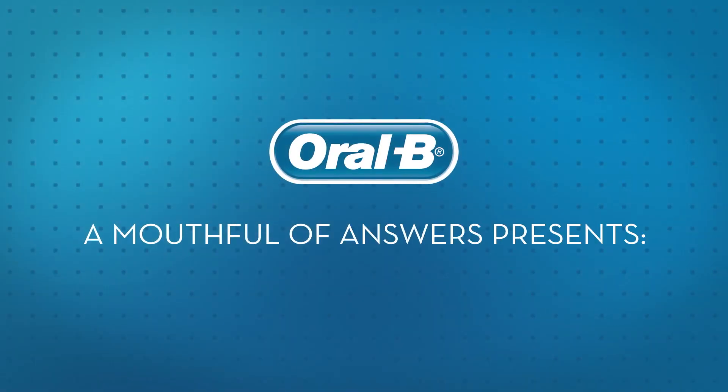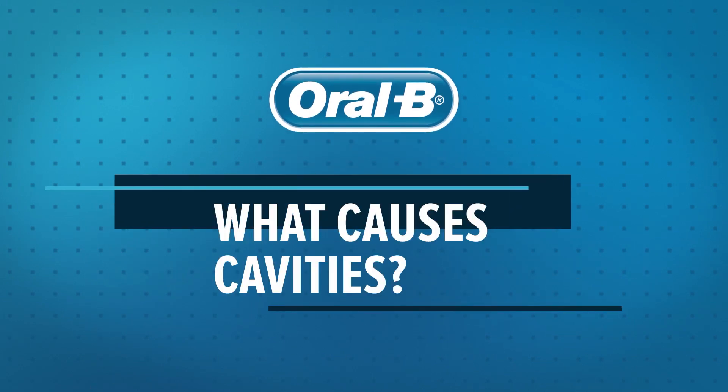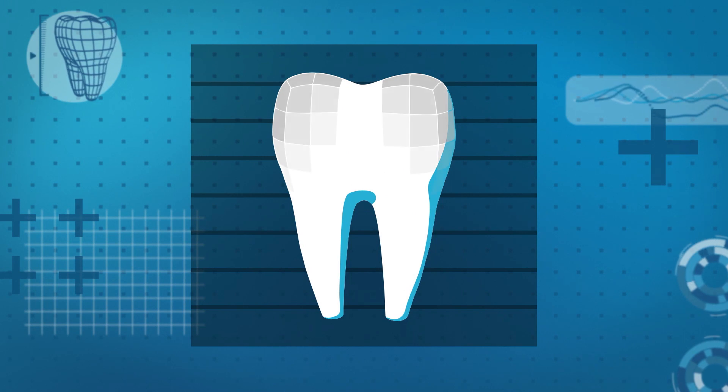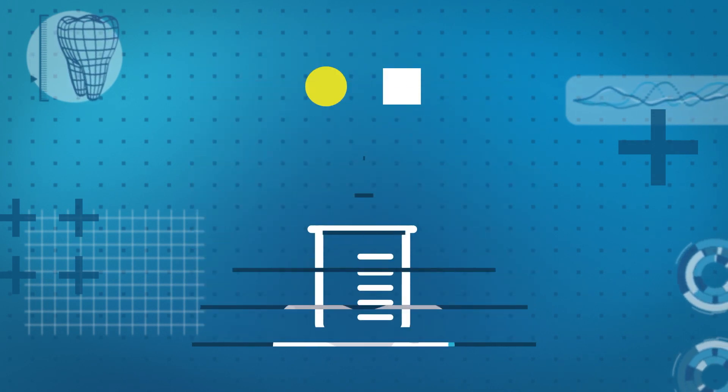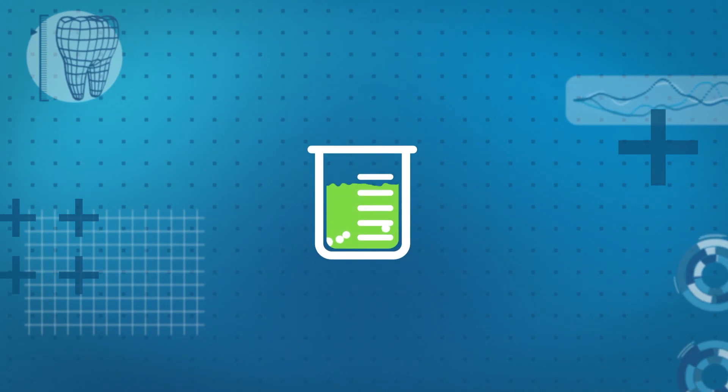Oral-B, A Mouthful of Answers presents What Causes Cavities? Tooth decay is the softening of your tooth enamel caused by acids. These acids are created by plaque bacteria breaking down sugar from carbohydrates you eat.